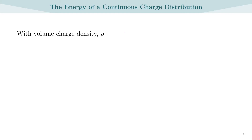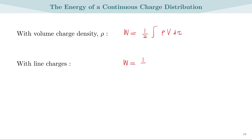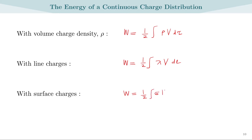In the case of volume charges with volume charge density rho, W can be written as 1/2 integral of rho times V d-tau. For line charges, the same equation becomes 1/2 integral of lambda times V dL. For surface charges with surface charge density sigma, the work done is 1/2 integral of sigma times V dA.